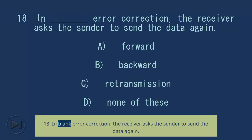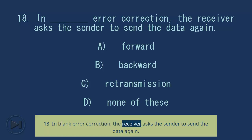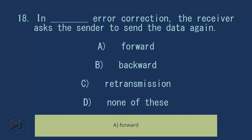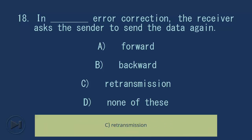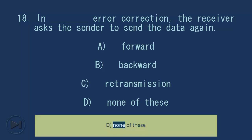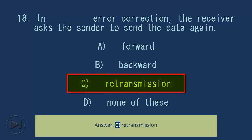Question 18: In blank error correction, the receiver asks the sender to send the data again. A) forward, B) backward, C) retransmission, D) none of these. Answer: C, retransmission.